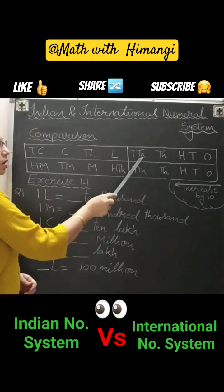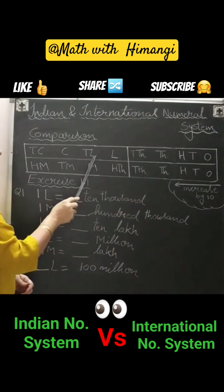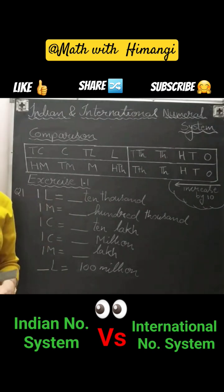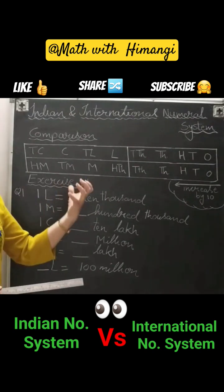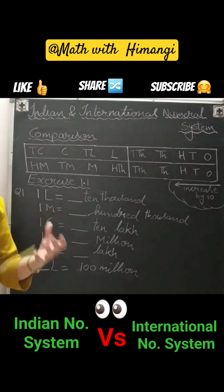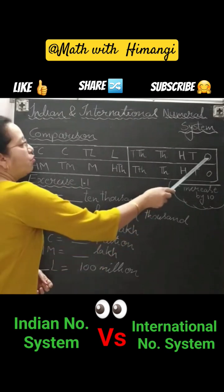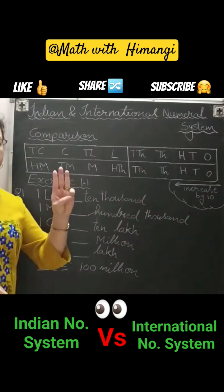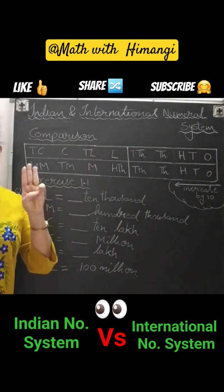Can you observe the way I am reading? I am giving pause. Once again, you can see that ones, tens, hundred - give a pause. It means first comma will come after three digits.